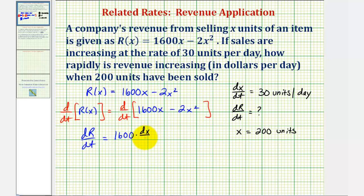We're applying the chain rule here because we're differentiating with respect to t, not just x. Then we have minus 4x times dx/dt.